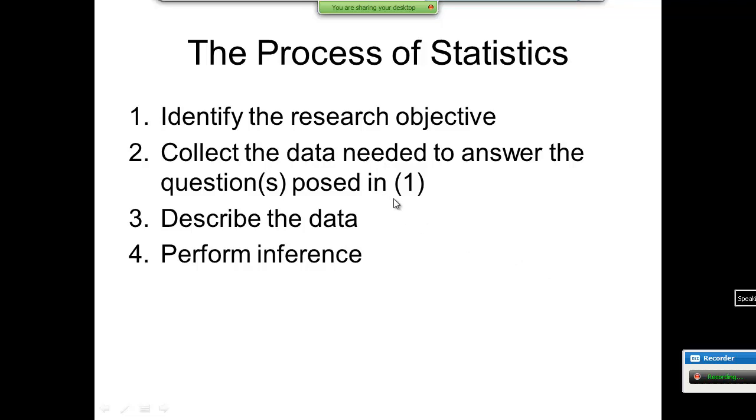The process of statistics: identify a research objective, decide what you're going to study. Collect the data needed. So if you're trying to figure out what the average age of college students are, that's your objective. You go out and collect data, you ask them their ages. You describe the data, so you summarize it, find the average, find the mean. And then our last step is you take that, then you tell something either about the future or about the entire population. You use that sample of 20 students to tell what all the students are like, or you could use it to predict the future.